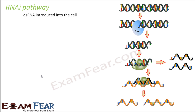This process is initiated only when a double-stranded RNA is introduced into the cell. Now, till now you might know that RNA, that is ribonucleic acid, is always a single-stranded structure, whereas DNA is a double-stranded structure. Double-stranded RNA, or dsRNA, exists when two RNAs that are complementary to each other bind with each other to form a double-stranded RNA.